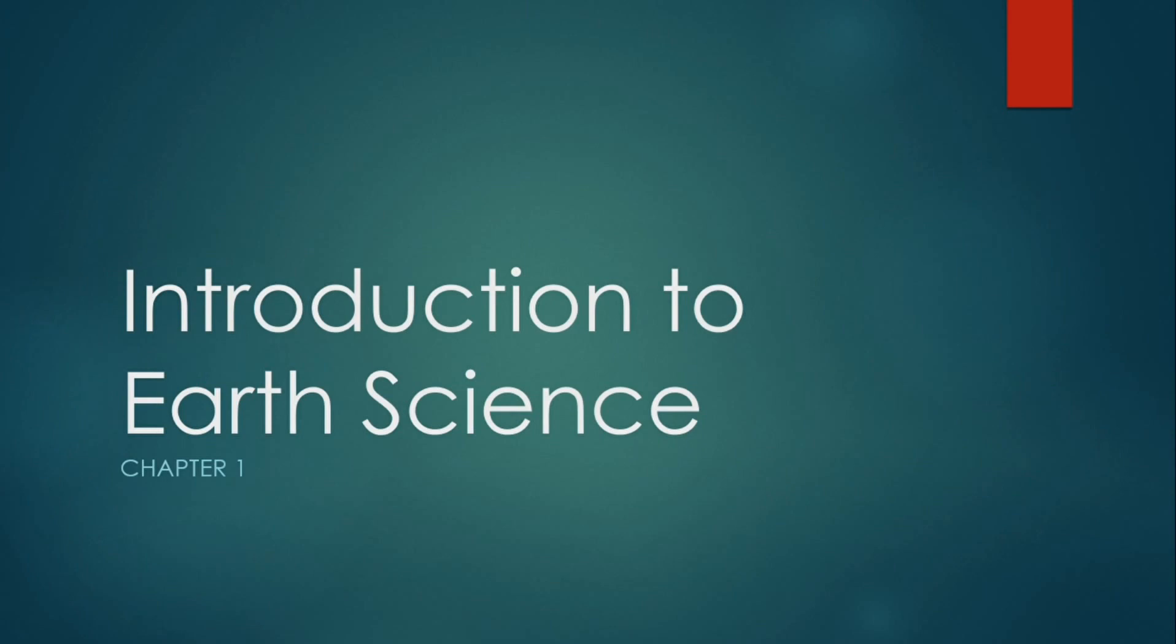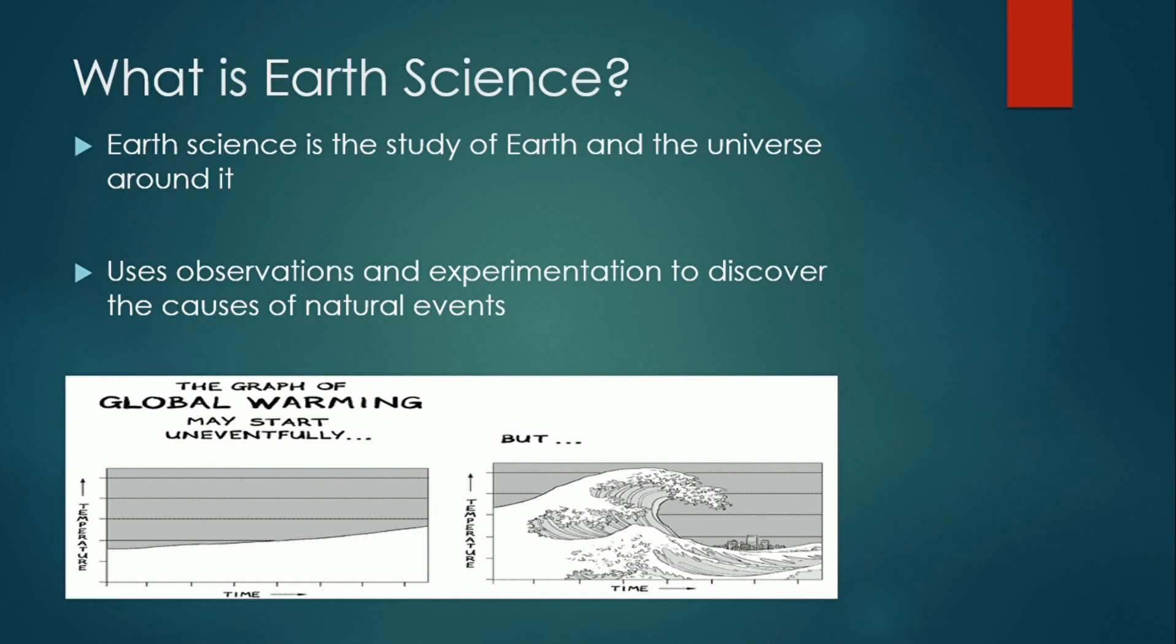Before we start our first lesson in earth and life science, let us first define what is earth science. Earth science is the study of earth and the universe around it. It uses observation and experimentation to discover the causes of natural events.